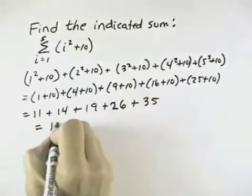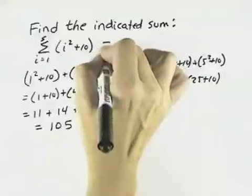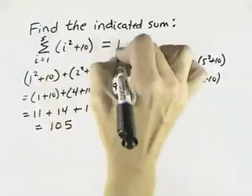So if we add all of those together, we should get 105. So that means that this sum from i equals 1 to 5 of i squared plus 10 is 105.